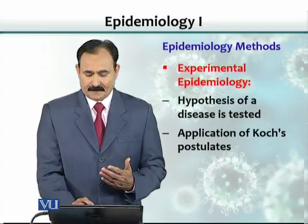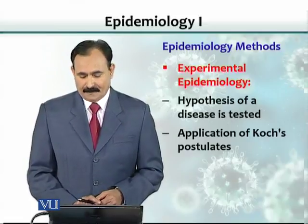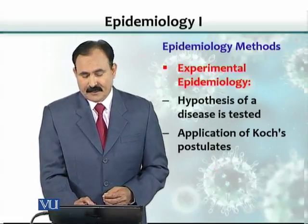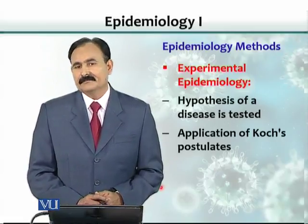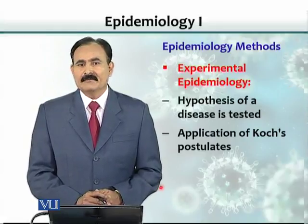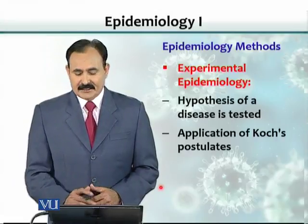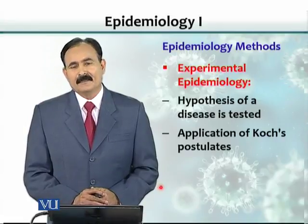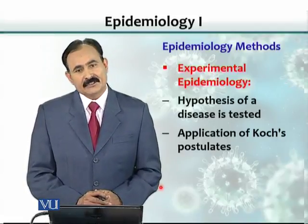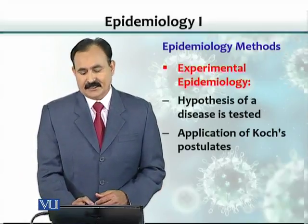Koch's postulates are the observations made by Robert Koch, a German microbiologist. He postulated that there is always a cause of an infection, whether a bacterium or a virus. This organism must be present in the patient, isolated, and cultured in the lab. Under the microscope it should have a specific morphology. If injected into a lab animal, it should produce the disease, and then the same organism should be isolated from the diseased animal and demonstrated to be the same as originally seen. These are Koch's postulates, and they are tested in experimental epidemiology.